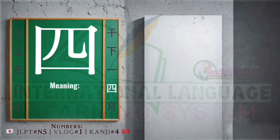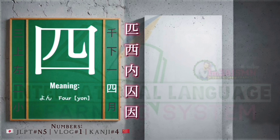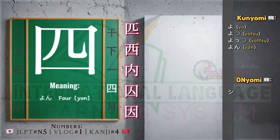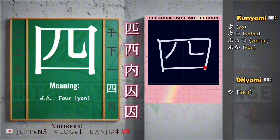This kanji means yom, yom, nangu, yom. Similar types of this kanji. Kunyomi reading of this kanji: yo, yotsu, yotsu, yon. Onyomi reading of this kanji: shi. Stroking method of this character — it has five strokes.